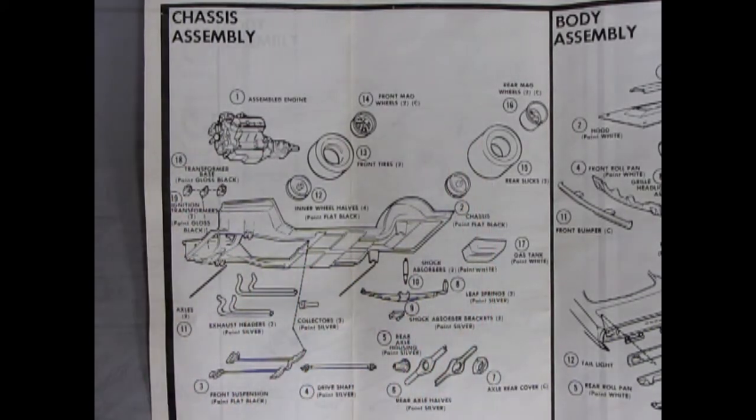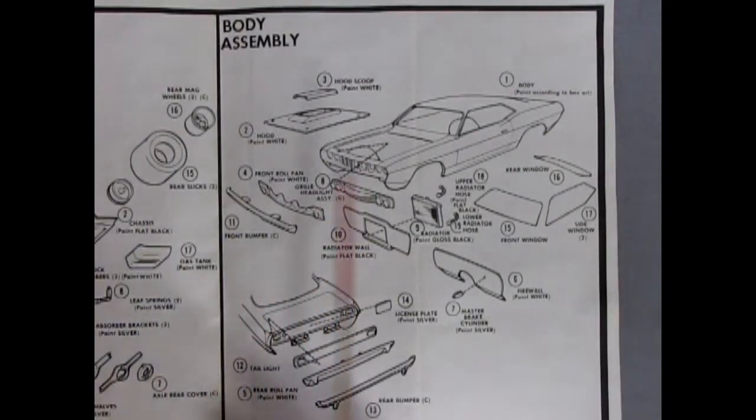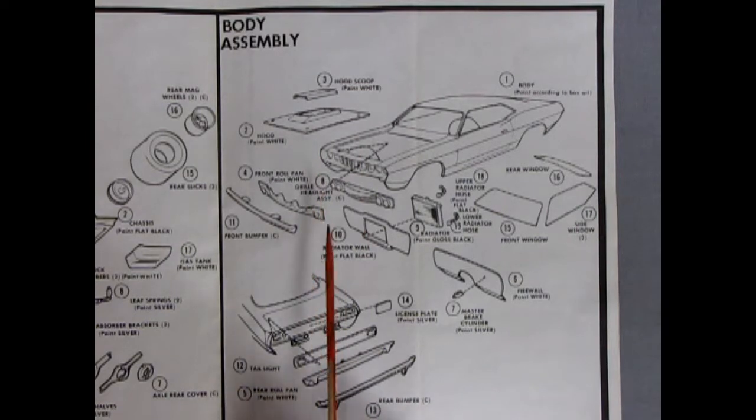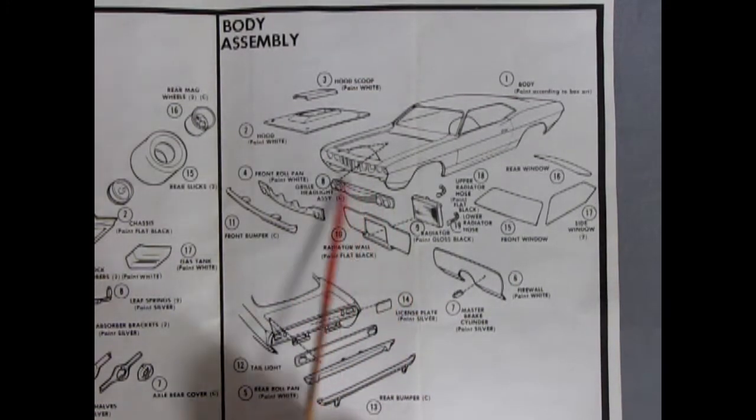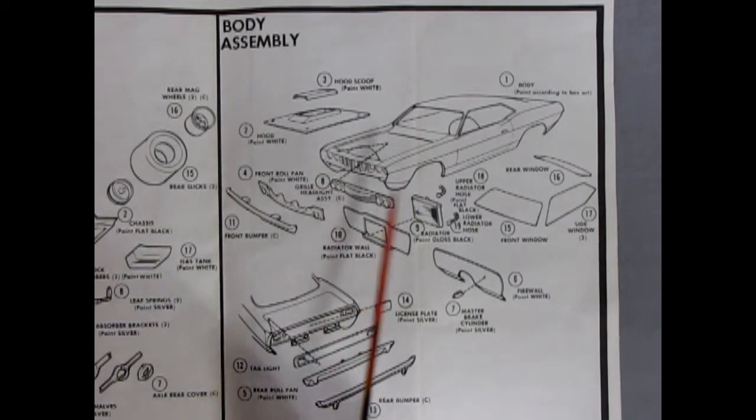And our final assembly here is, of course, our body assembly. We have a hood scoop going onto this nice hood. The grills pop in from the back, which is nice compared to the monogram kits, where this is all one piece. Although the monogram kits, they have their good merits as well. Front roll pan, our front bumper. There's our radiator wall.